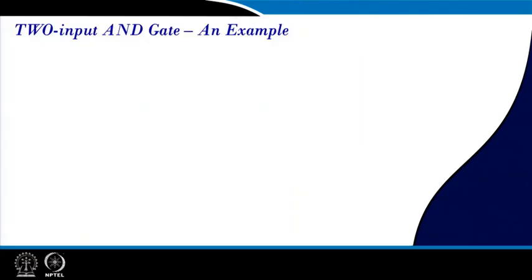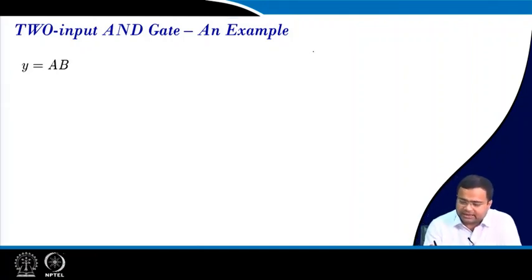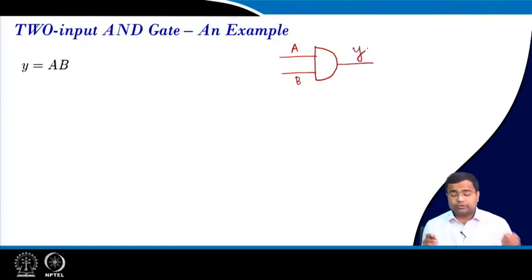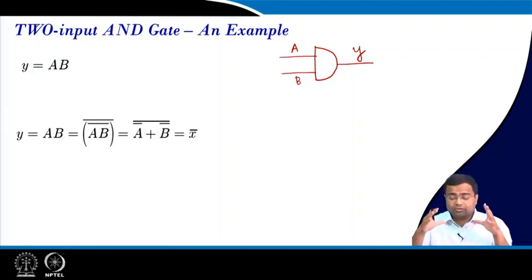First we want to take an example of an AND gate. The AND gate we are considering is a two-input AND gate where A and B are the two inputs and Y is the output. We want to implement this gate using CMOS.